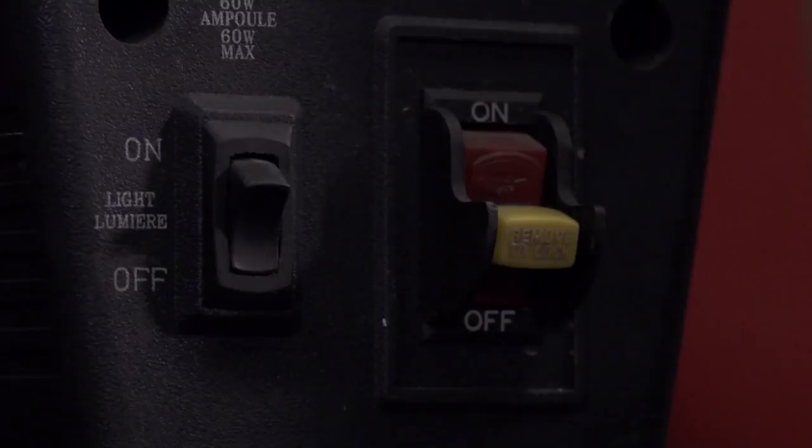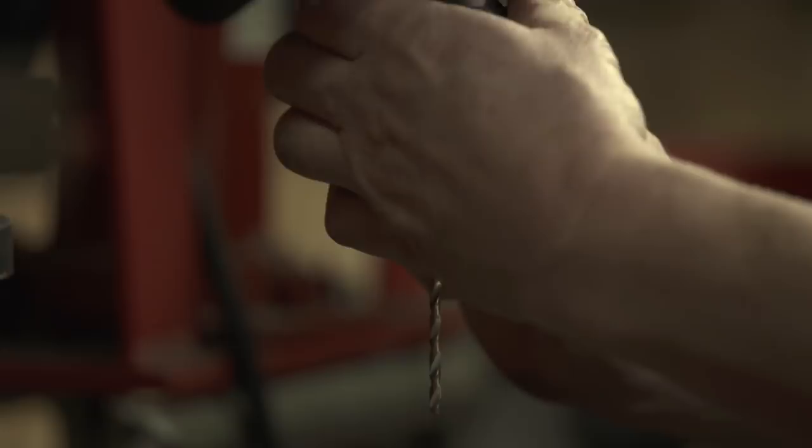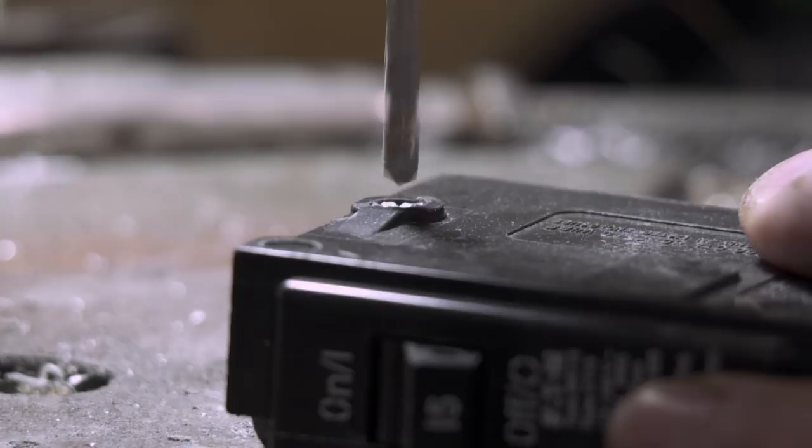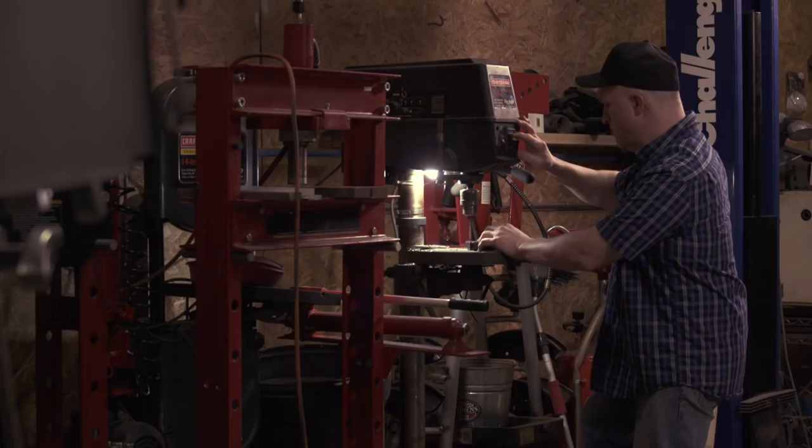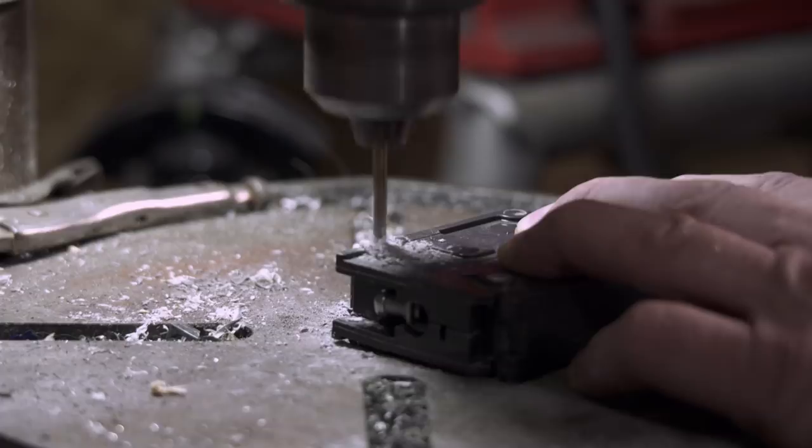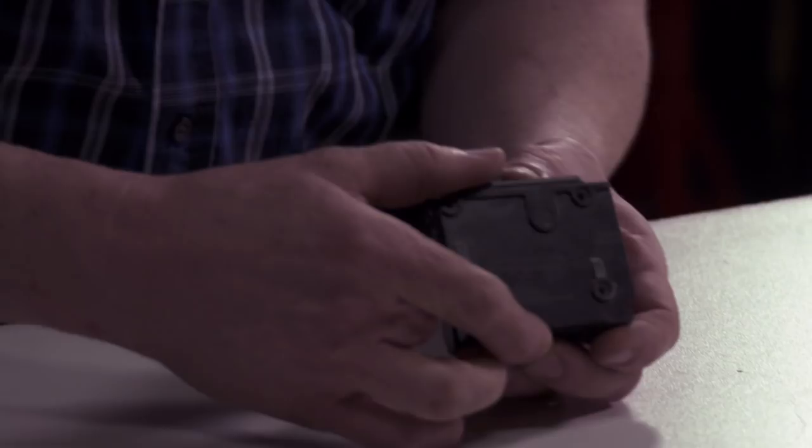Circuit breakers normally interrupt the flow of current in two situations. One is a slow gradual increase in load until it exceeds the rating of the circuit breaker, and the other is a complete short circuit. I want to see visually what's going on inside of that circuit breaker.